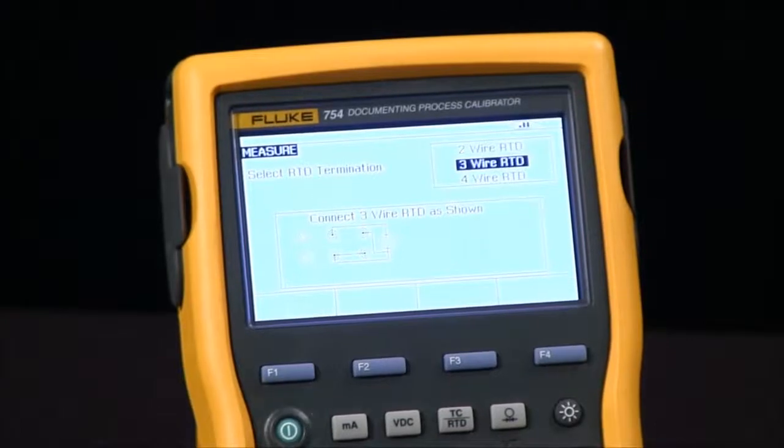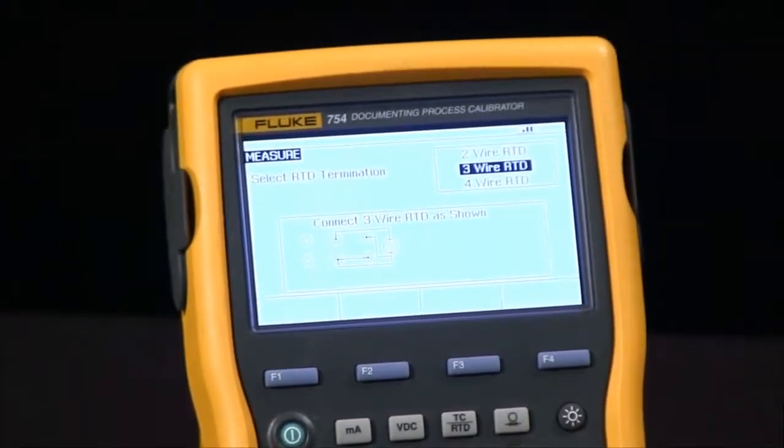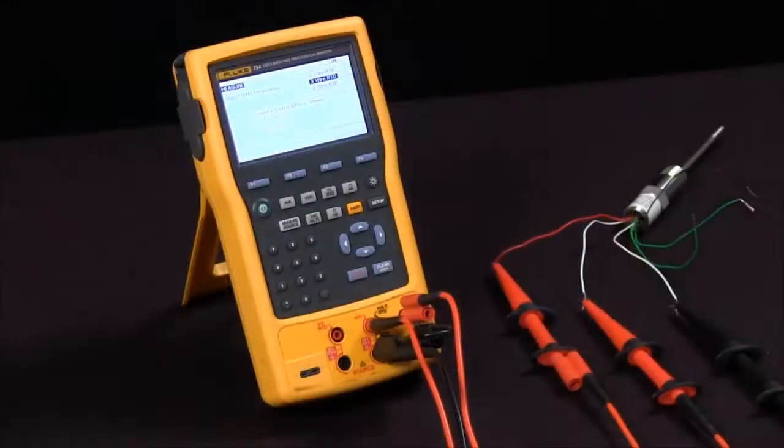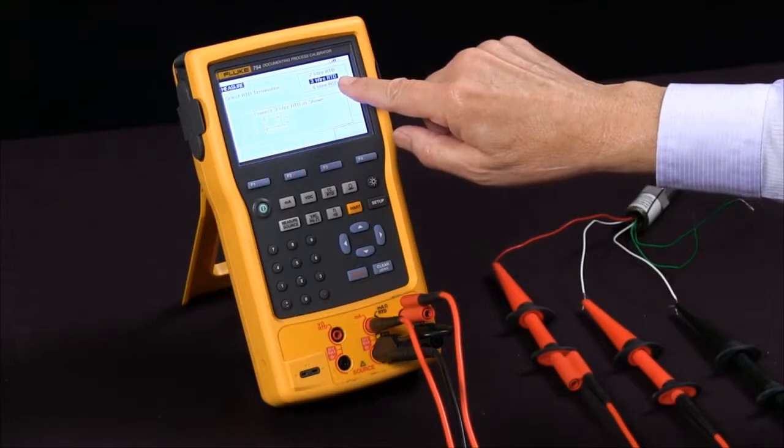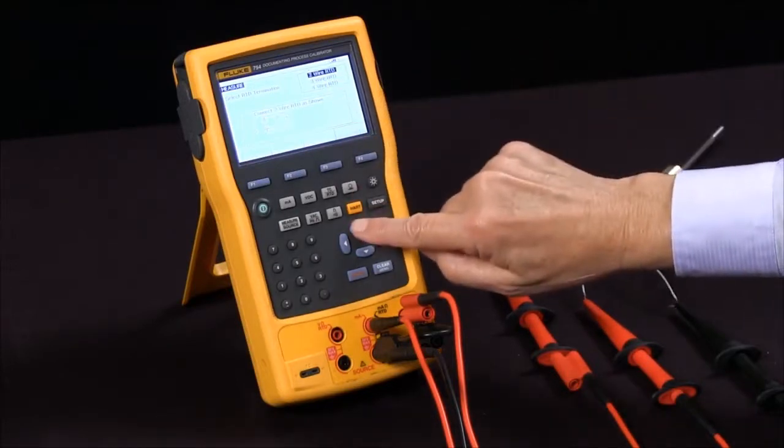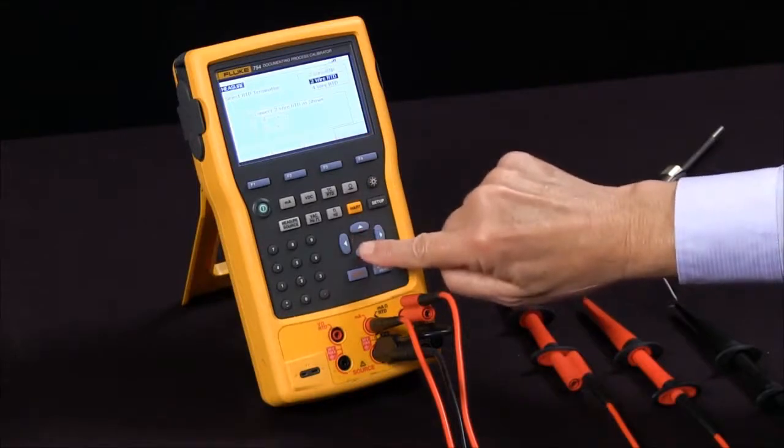And now we have the screen that shows us how to connect the two, three, or four wire RTDs. Right now we're highlighting three wire RTD. We can change that. We can look at two wire. It shows us how to connect two wire, three wire, or four wire.